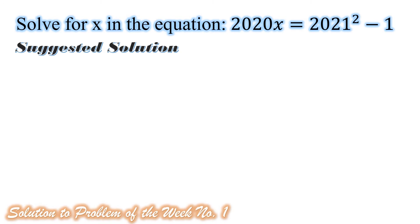Here is our suggested solution. Let us rewrite the given equation. We have 2020x equals 2021 squared minus 1. Since 1 is also a perfect square, the right-hand side of the equation is a difference of two squares of the form a squared minus b squared.